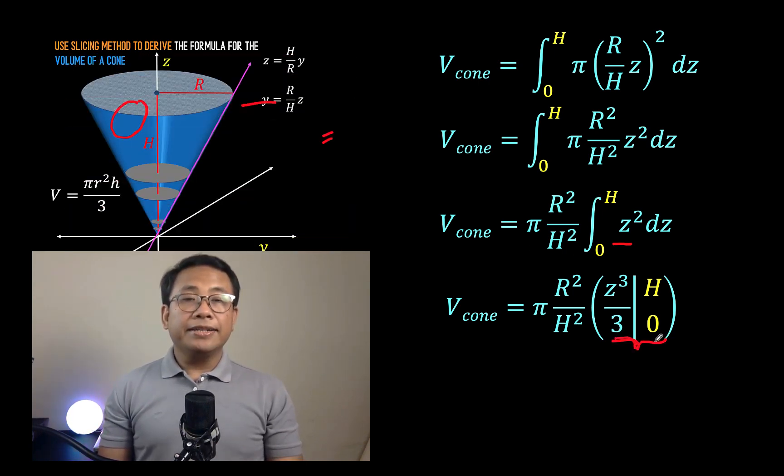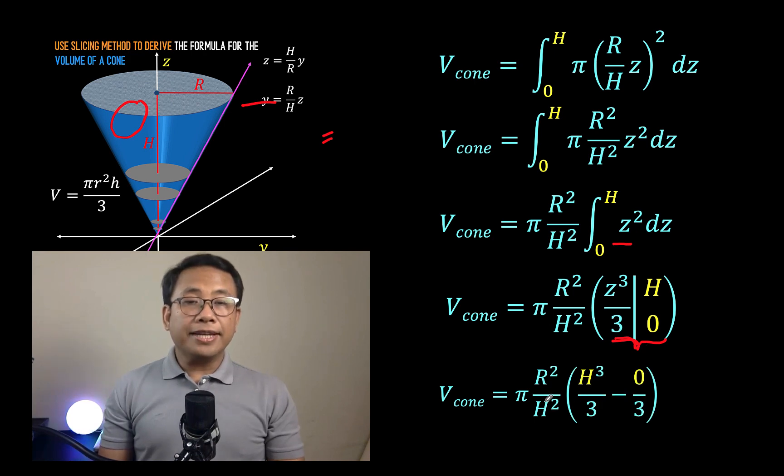Then evaluating this part here, we now have, we copy this constant pi r squared over h squared. Then substitute h to z to have h cubed over 3 minus substitute 0 to z to get 0 cubed over 3.